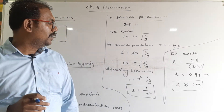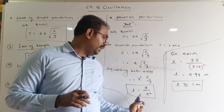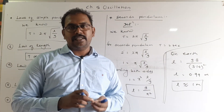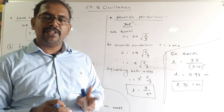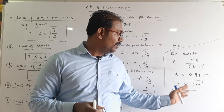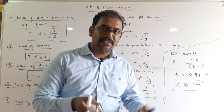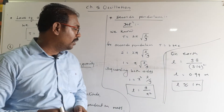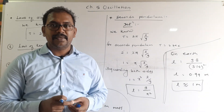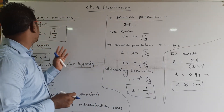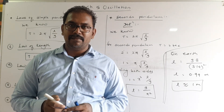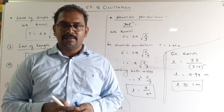This length changes with the value of g. On the surface of the Moon, a seconds pendulum still has a period of two seconds, but the length is not one meter because the Moon has a different value of g. I hope everyone understood the laws of simple pendulum as well as the seconds pendulum. Thank you.